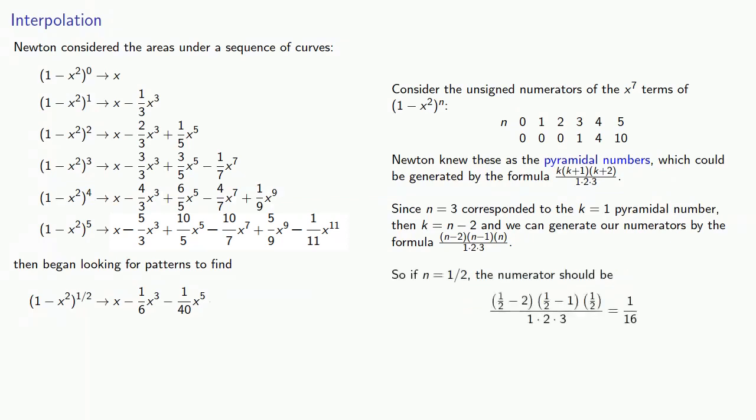And so if n equals 1/2, our numerator should be... And we see that our x^7 terms are negative with denominator 7 and numerator 1/16.